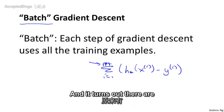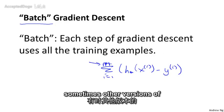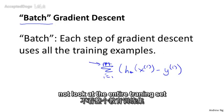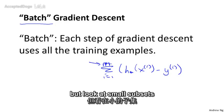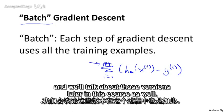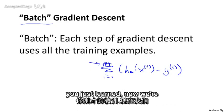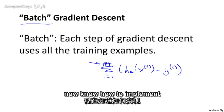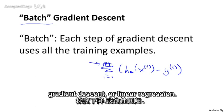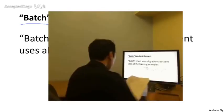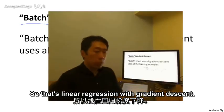It turns out there are sometimes other versions of gradient descent that are not batch versions — that instead do not look at the entire training set, but look at small subsets of the training set at a time. We'll talk about those versions later in this course. But for now, using batch gradient descent, you now know how to implement gradient descent for linear regression.